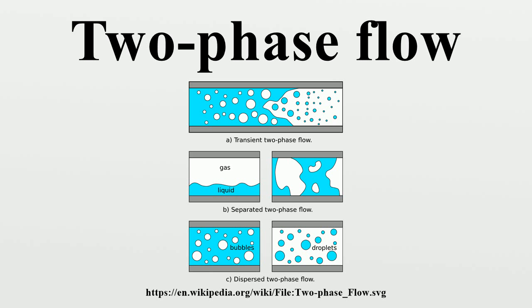Gurgling is a characteristic sound made by unstable two-phase fluid flow, for example as liquid is poured from a bottle, or during gargling.